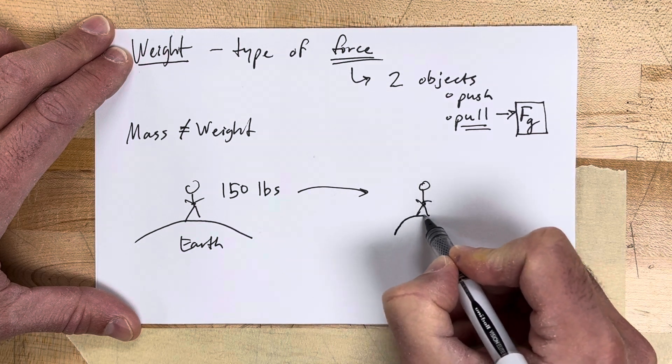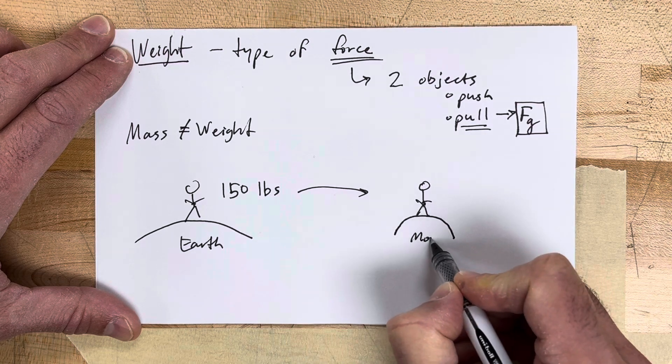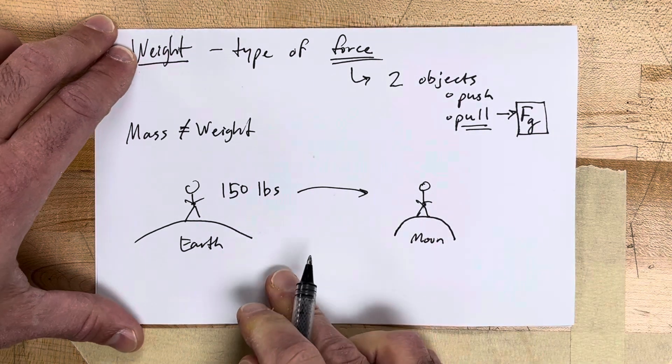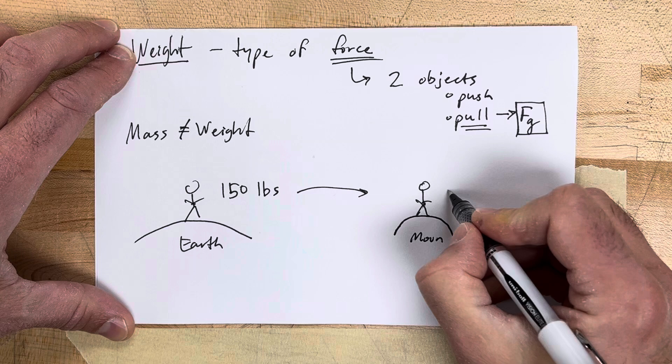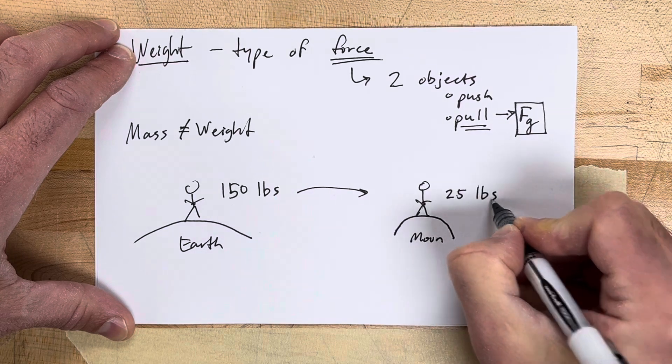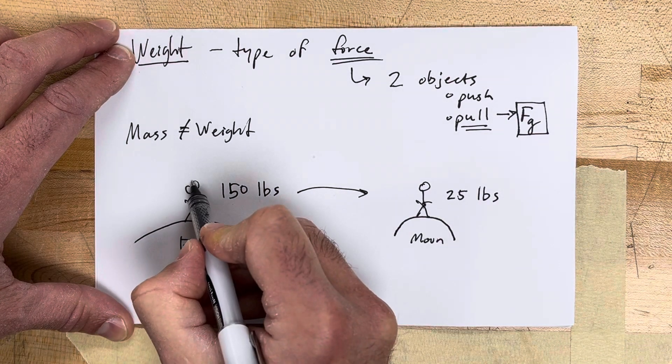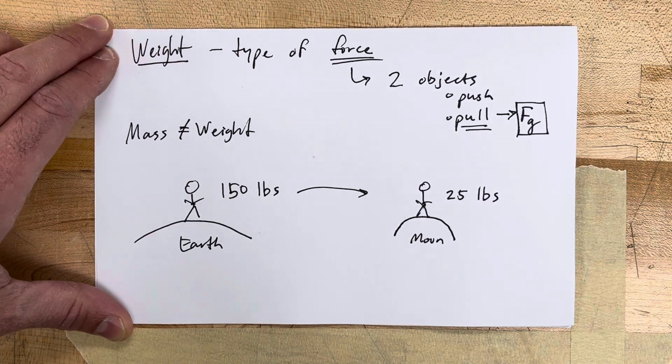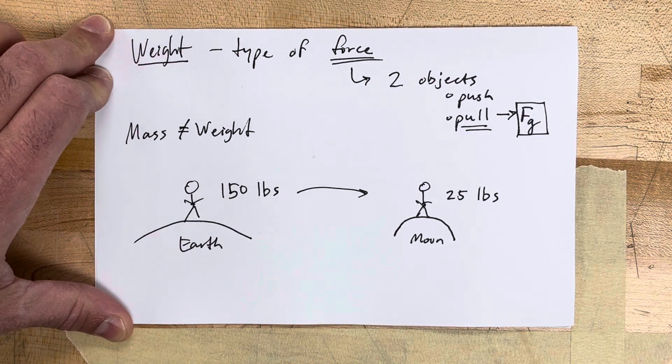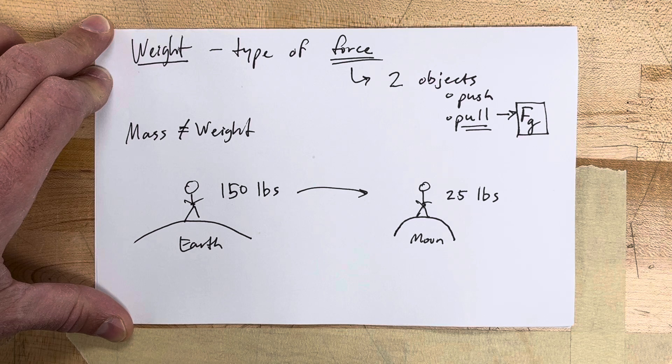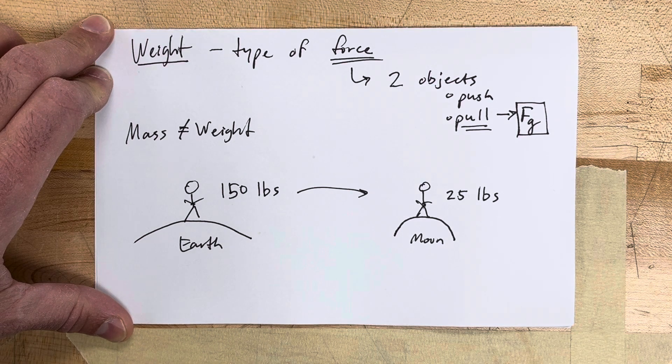The moon is smaller than the Earth, and if you took a scale with you to measure your weight, you would only weigh about 25 pounds even though your mass did not change. Your mass is just the amount of stuff that you're made up of - the amount of protons, electrons, and neutrons in your body.